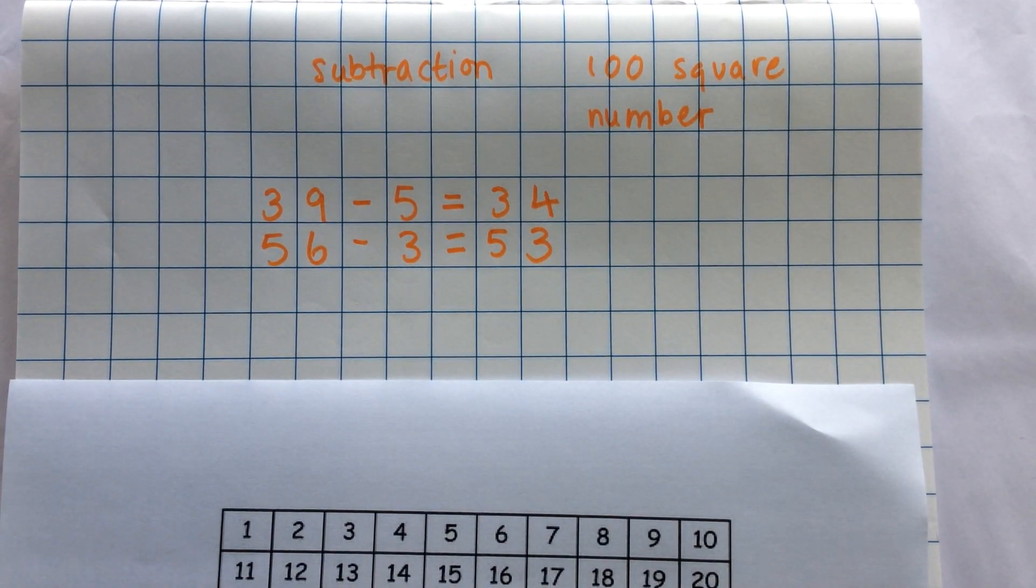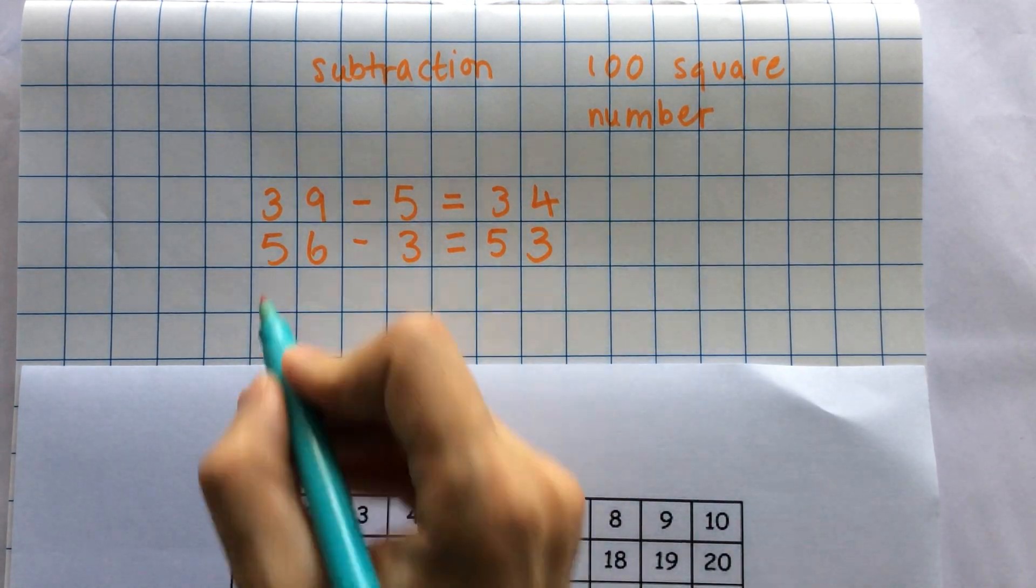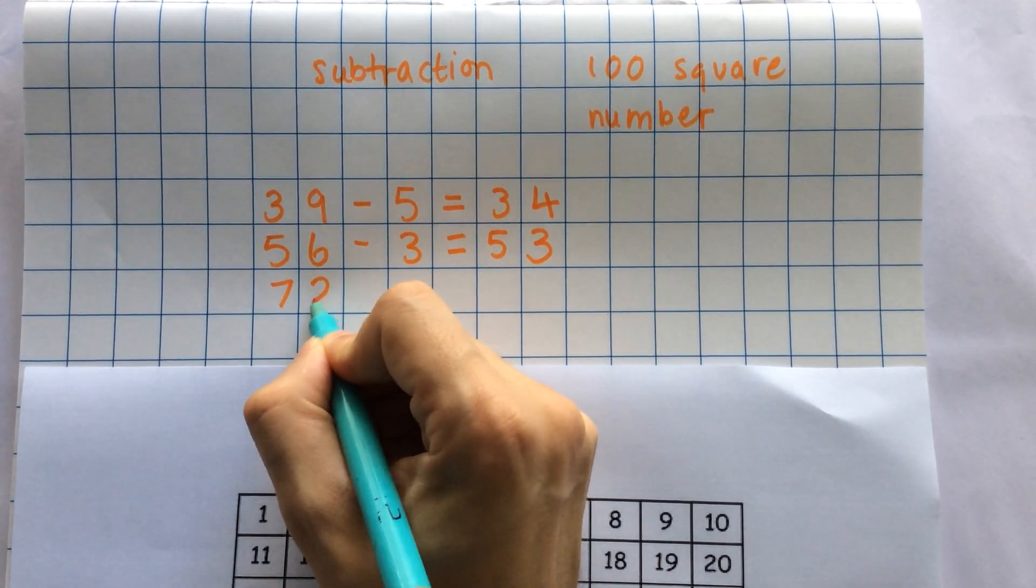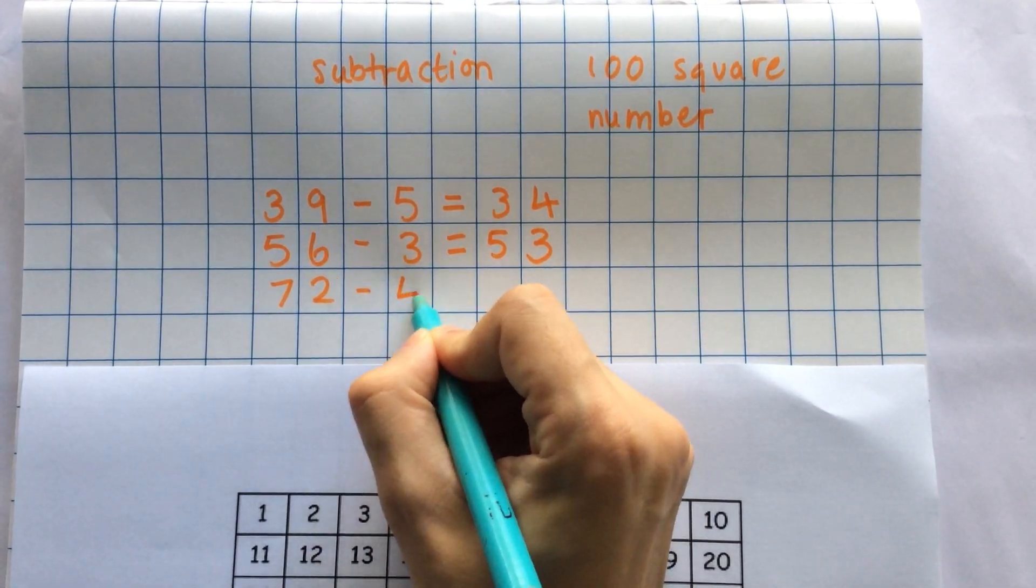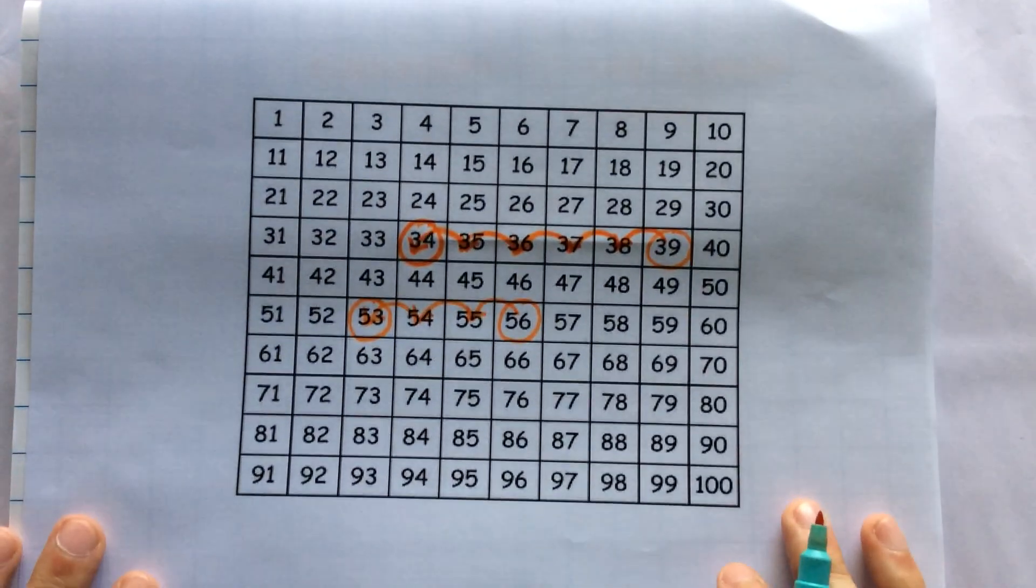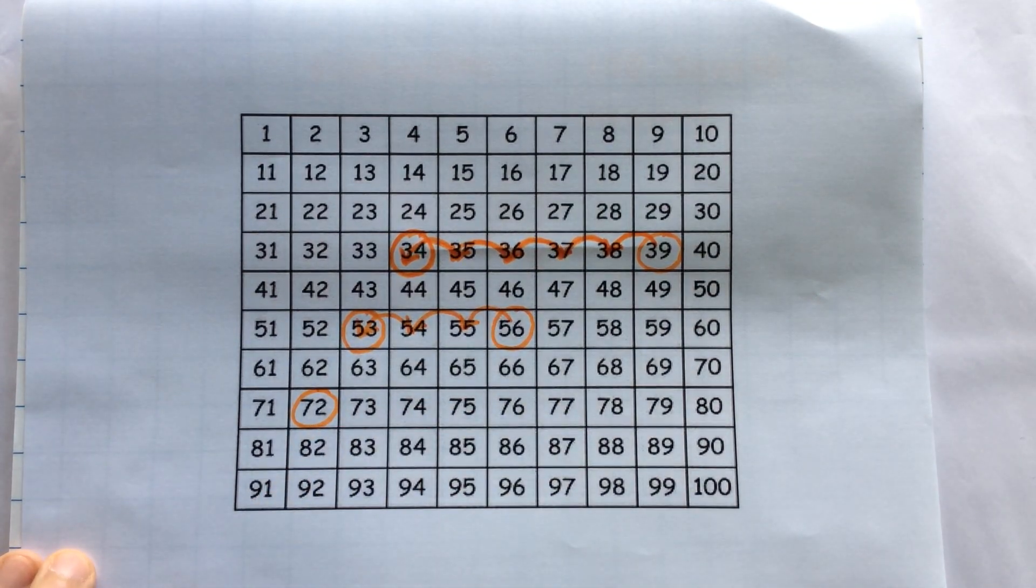Hundred squares can be a problem when you've got a bigger number and you're counting back through the 10. Like this. If I have 72 minus 4, so I follow the same process. I find 72 and I circle it. Then I jump back 4.